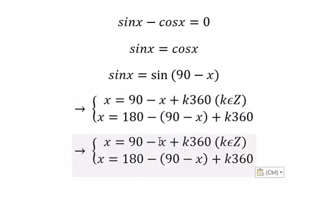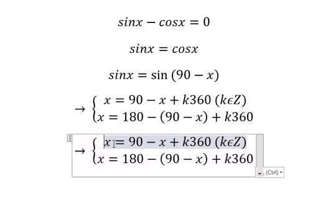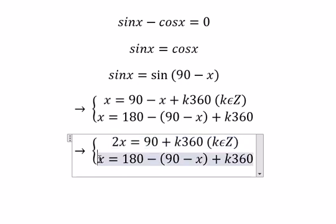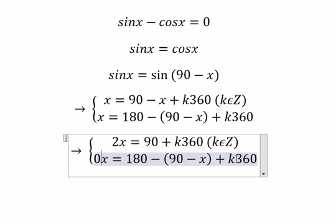For the first equation, we put negative s on the left, so you get 2s equals 90 plus k360. For the second equation, negative s becomes positive s, giving us 0s.